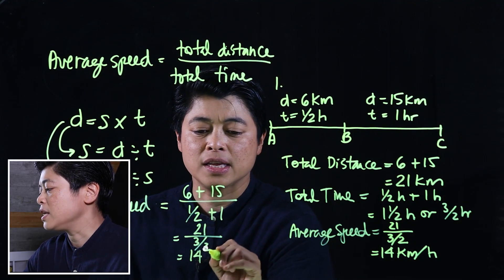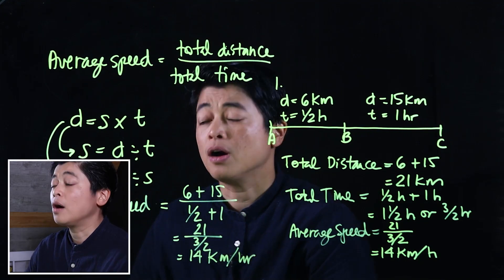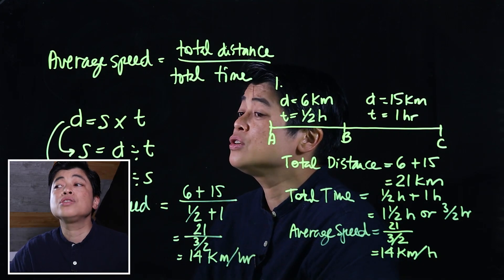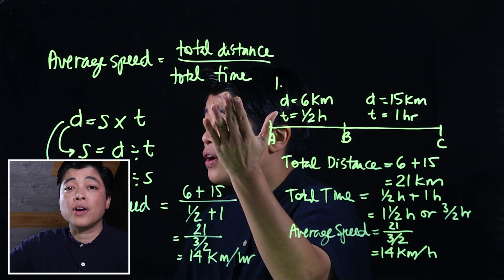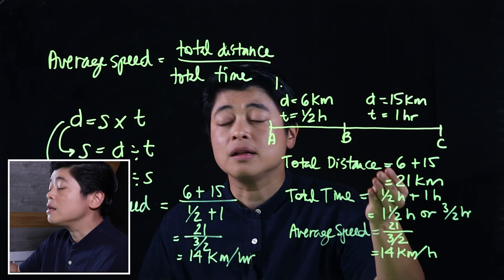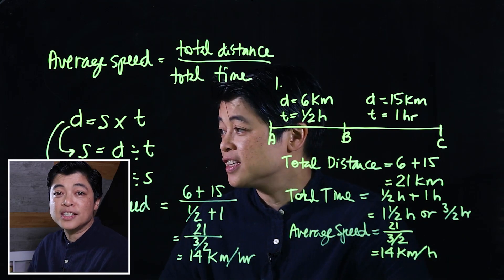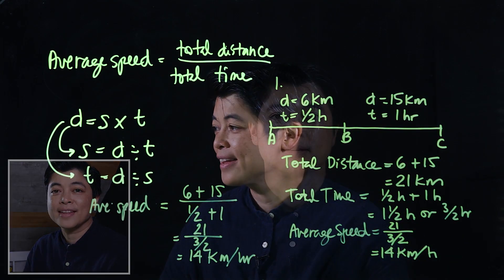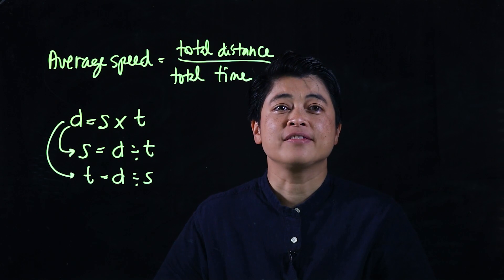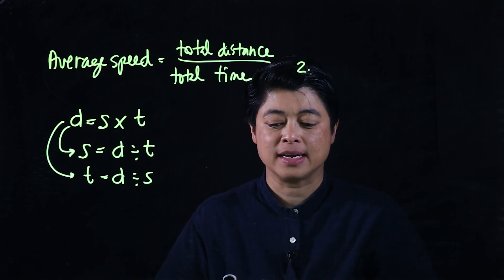If you just plug into the formula directly: average speed equals 6 plus 15 divided by one-half plus one, that's 21 divided by three-halves, which also gives you 14 kilometers per hour. You can go straight and use the formula directly, or do it step by step as the book shows.